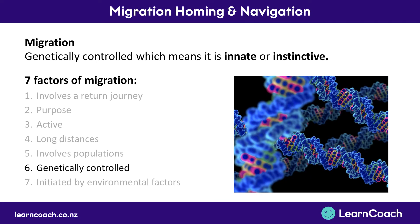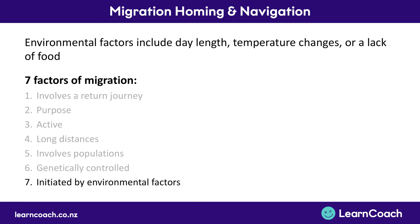Next, migration is a genetically controlled thing. If you've got a bird or a butterfly which migrates, it's instinctive. You could put it by itself and it would still have that innate, instinctive, genetic urge to migrate when the season came. Finally, it's initiated by environmental factors — if the day gets too short, that could trigger the innate need to start migrating. It could also be changes in temperature or a lack of food.